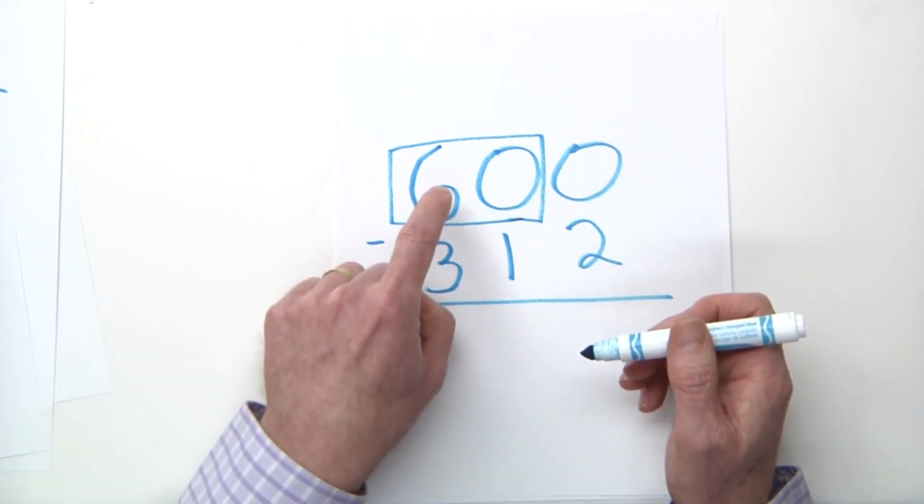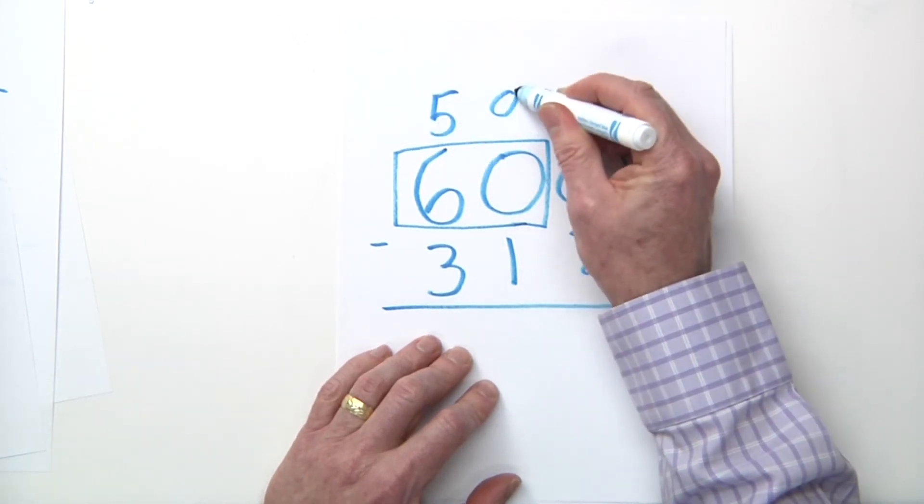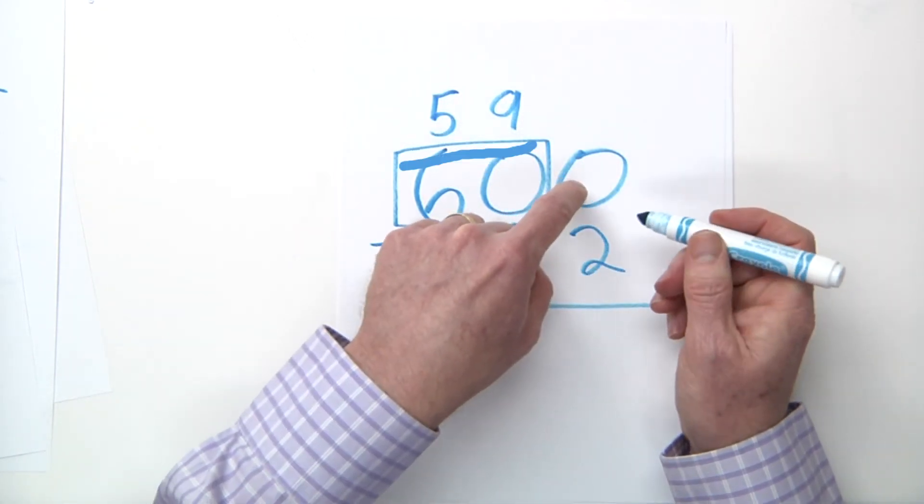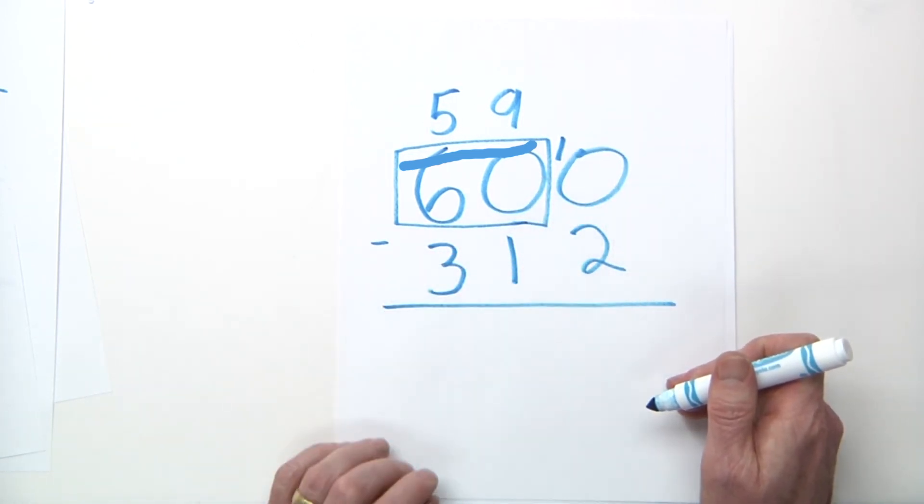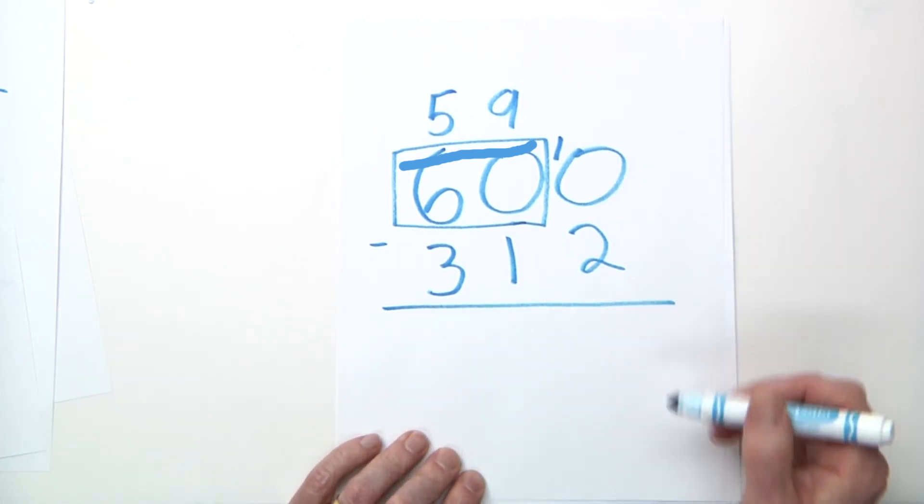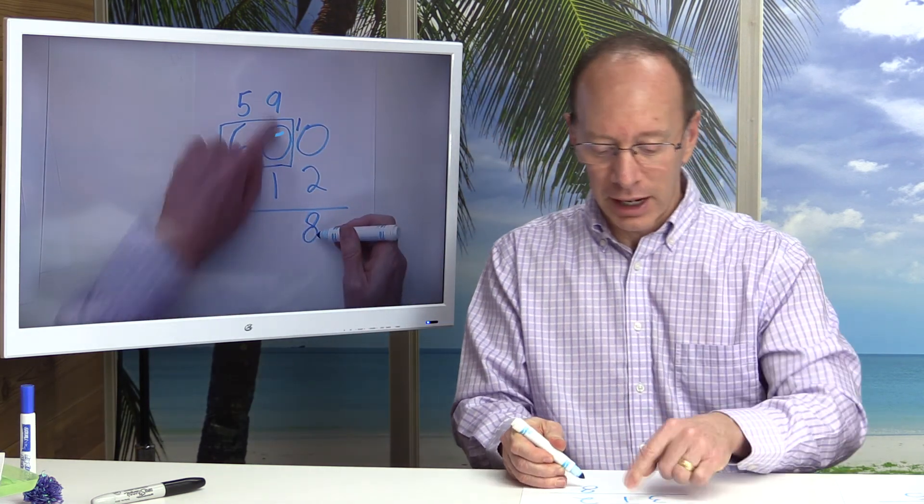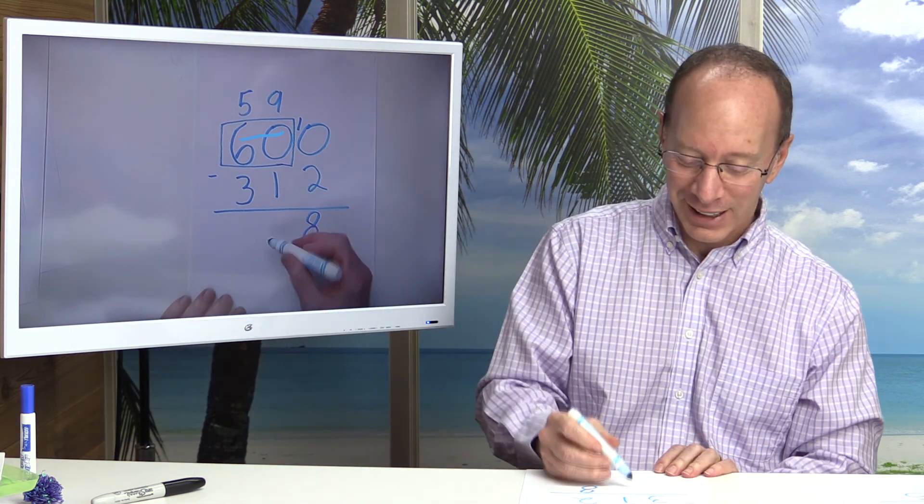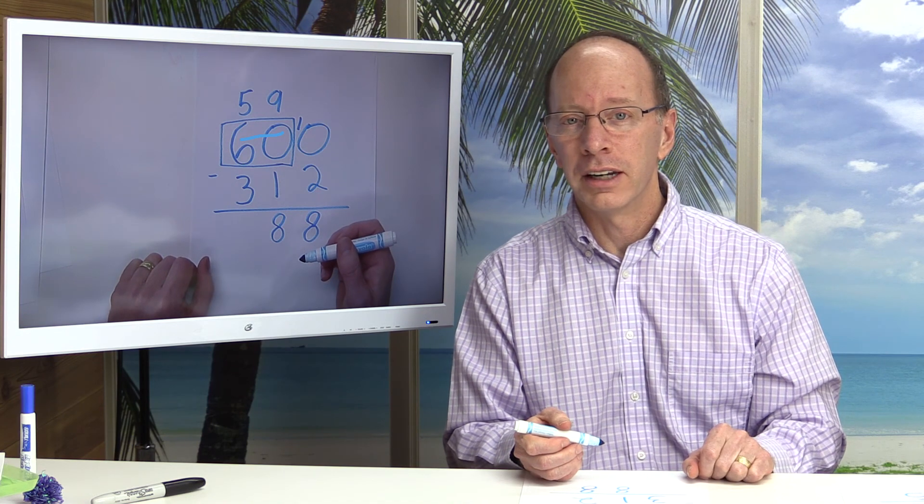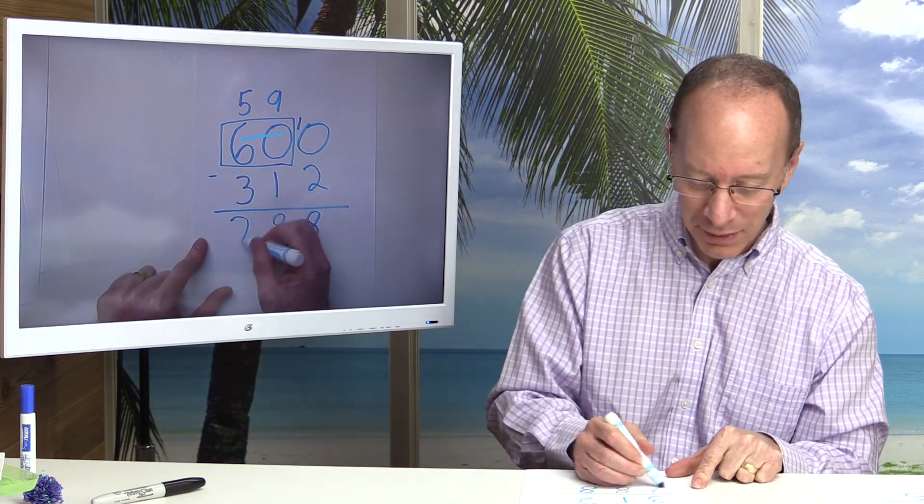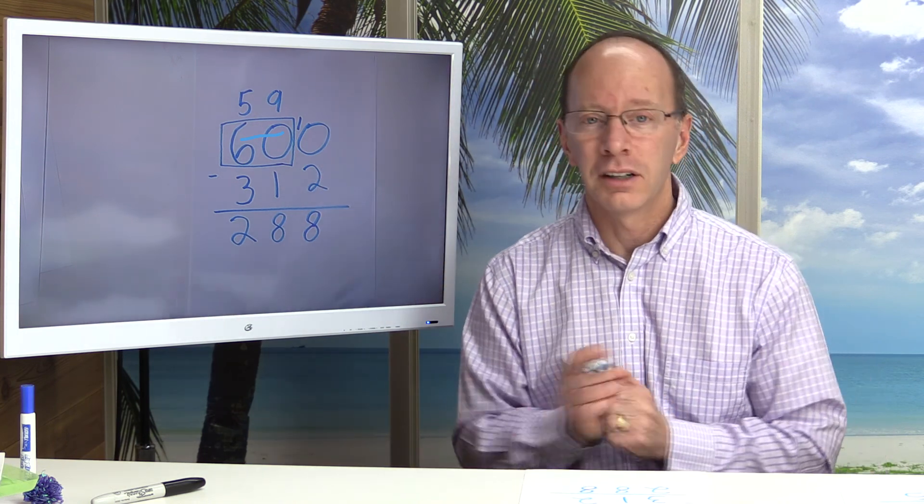And I'm going to take 60 minus 1, which would be 59. And that was a 10. So I put a 1 right here. It's 10 plus 0 is 10. So now I have 10 minus 2. What is that? That is 8. 9 minus 1? That is 8 also. 5 minus 3? That's right, 2. You guys are awesome. 288. 600 minus 312 is 288.